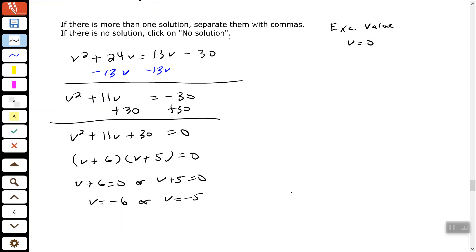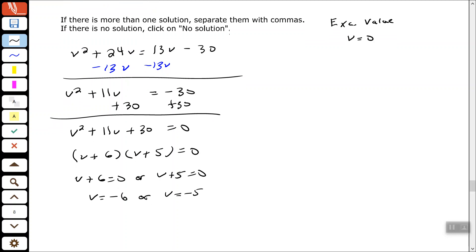Neither one of those are my excluded values. And it says here to separate answer by commas if there's more than one solution. So normally, if we were writing the answer out, we would write it like this. But this asked us to separate them by commas. So negative six comma negative five.